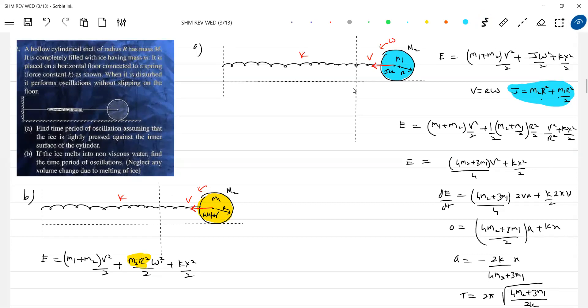Try to notice this part. It will have only translatory motion. Previously the ice was having both translational and rotational, now the water will have only translatory motion. So here we have m1 v squared by 2, rotating motion only for cylindrical shell.